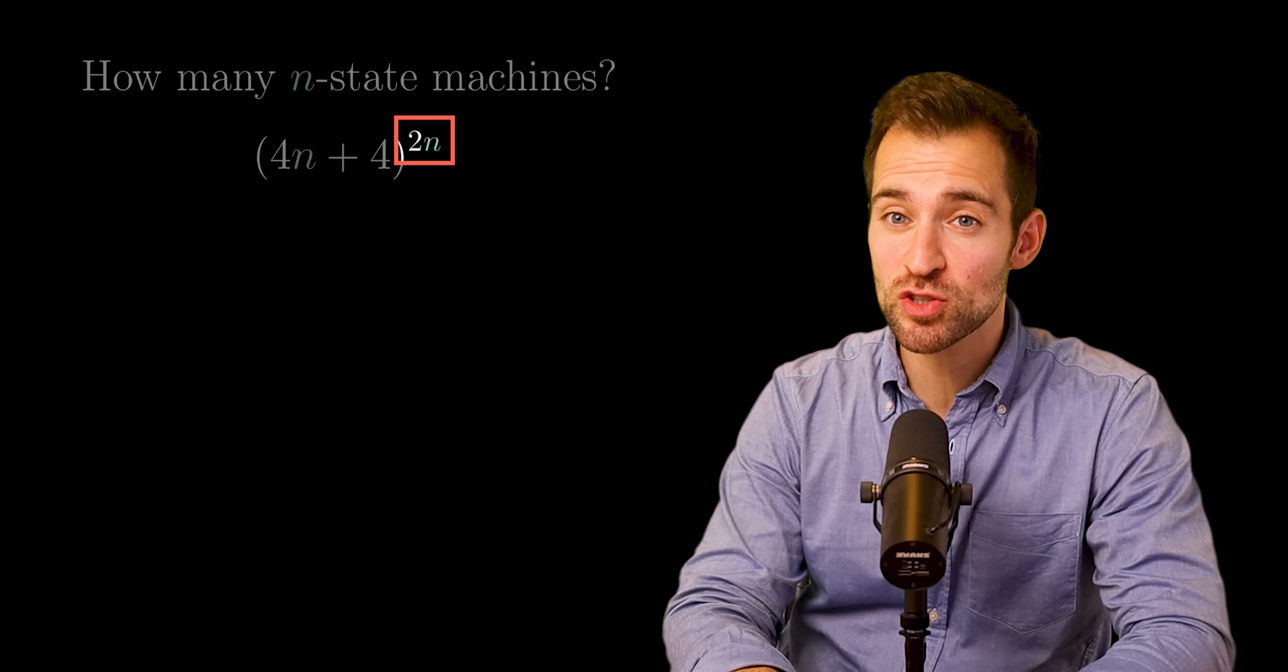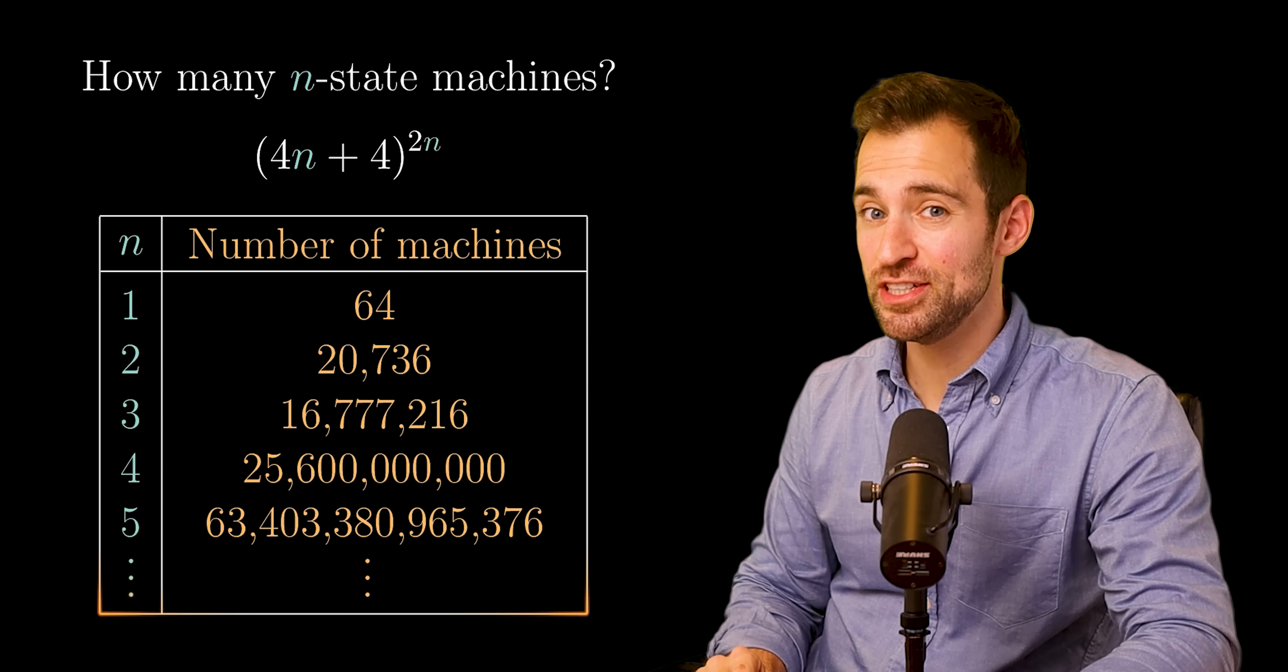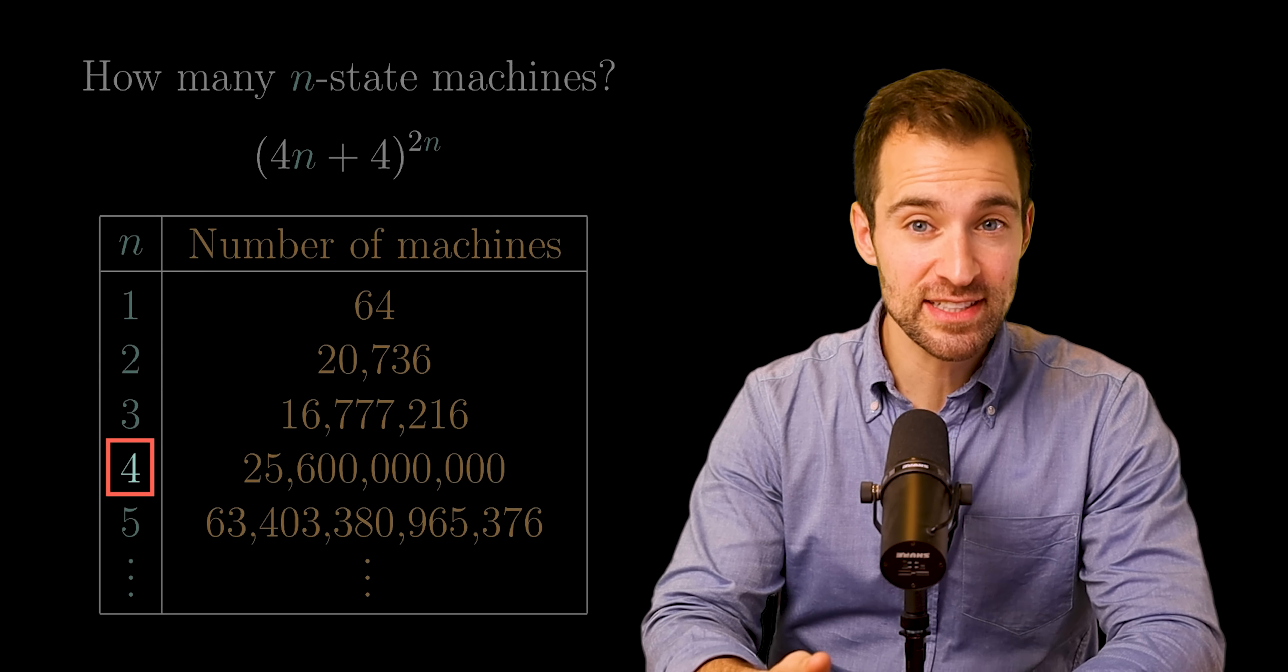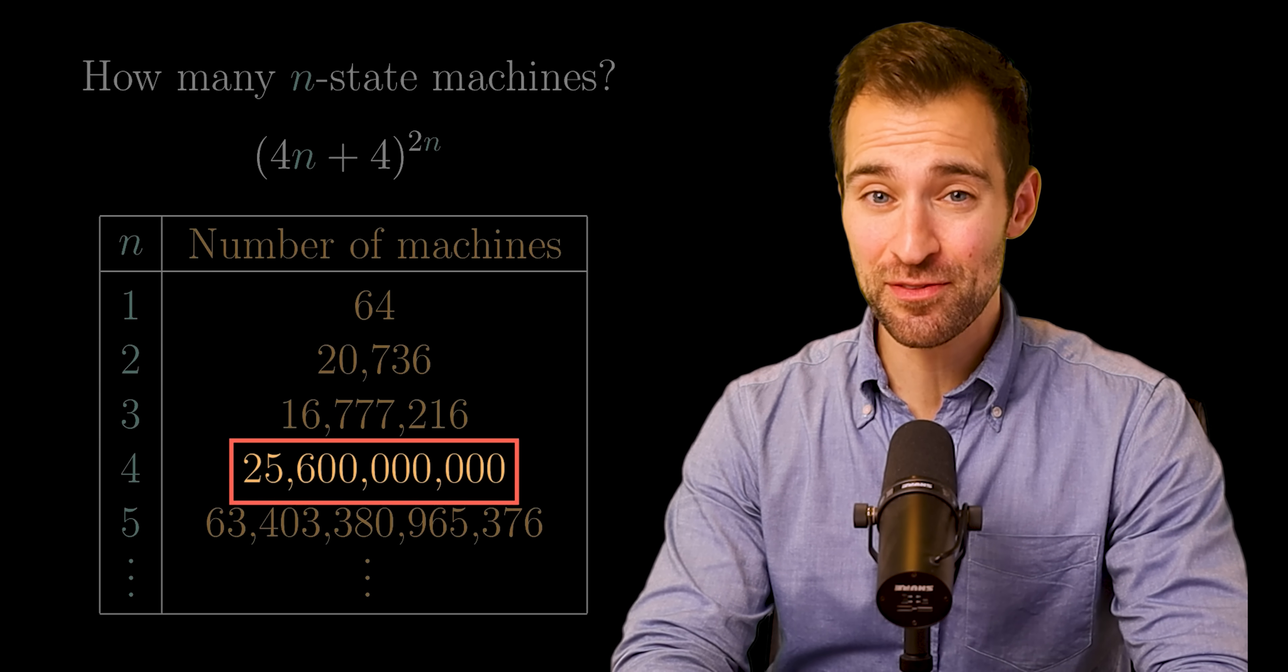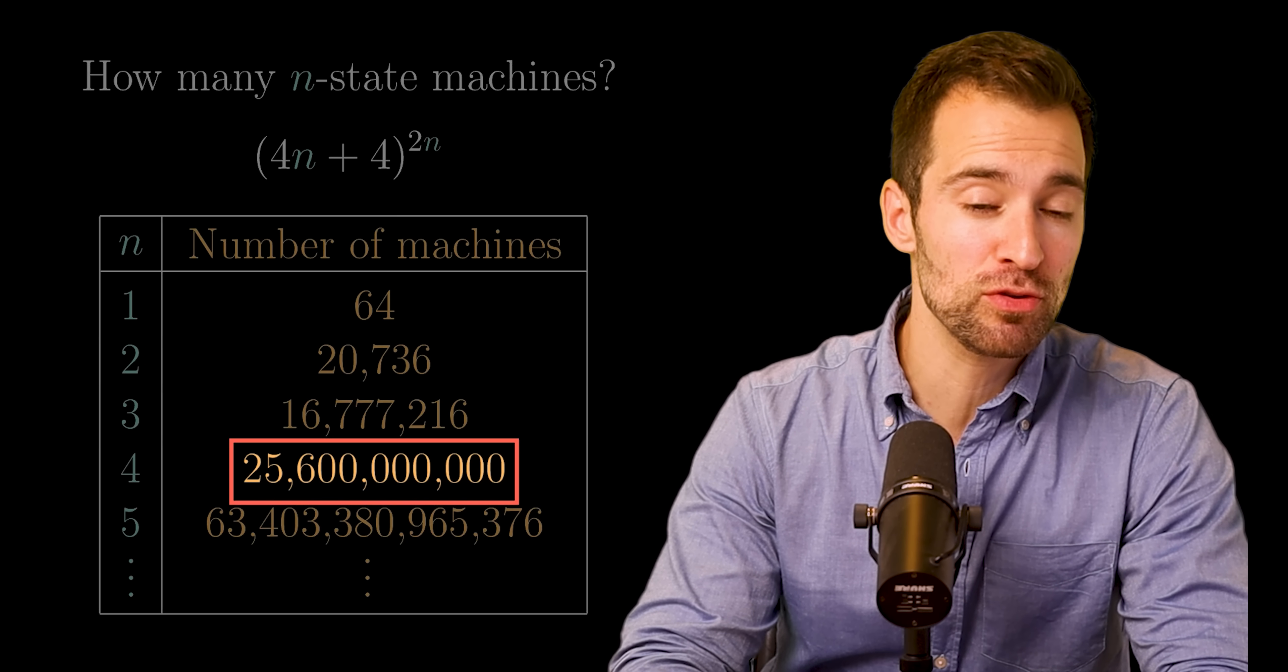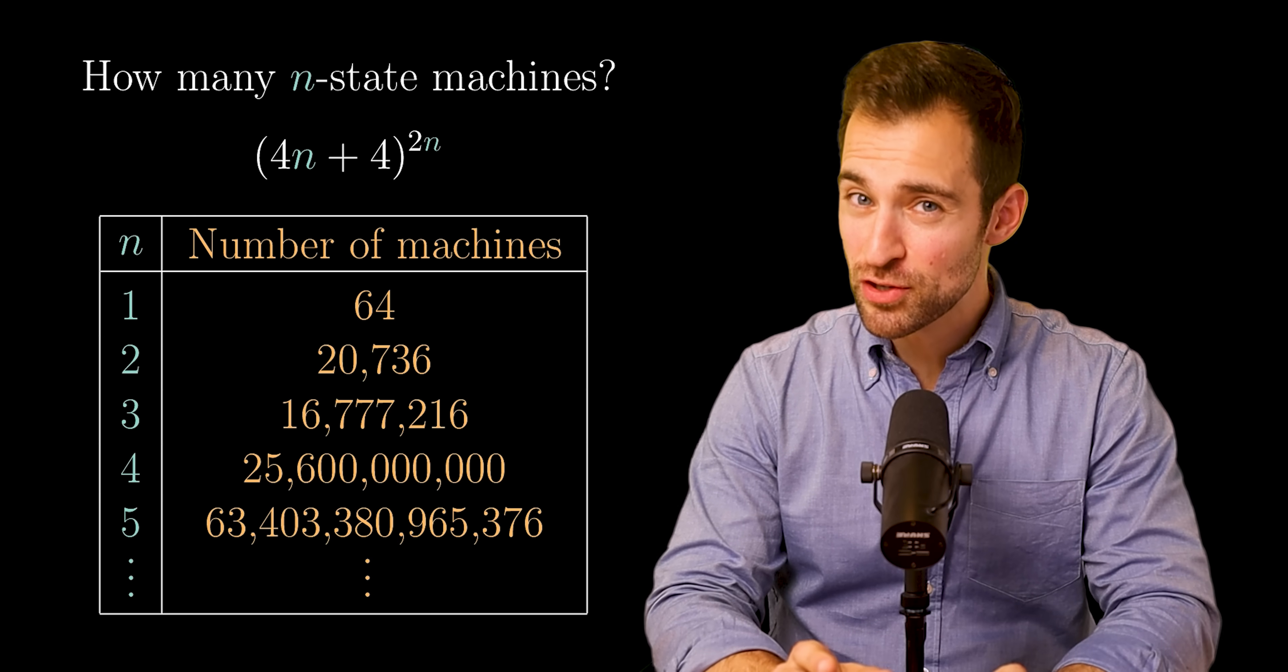So, for the number of states we've considered so far, that's a lot of machines to handle. When we had four states, that involved over 25 billion Turing machines. And us smart humans determined definitely that the most number of ones they could print is 13. And that was hard work.